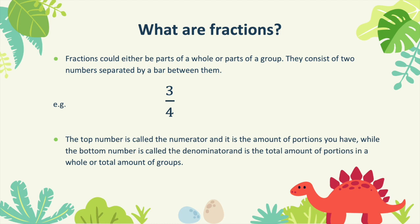What are fractions? Fractions could either be part of a whole or part of a group. They consist of two numbers separated by a bar between them. For example, 3 out of 4. The top number is called the numerator and it is the amount of portions you have, while the bottom number is called the denominator and it is the total amount of portions in a whole, or total amount of groups.